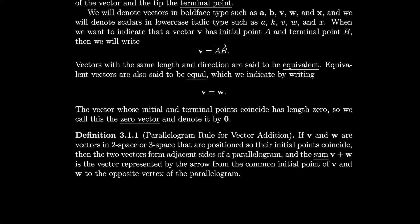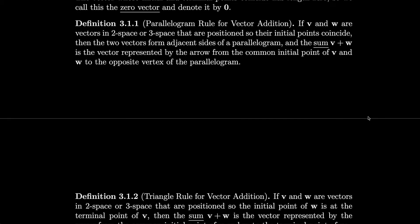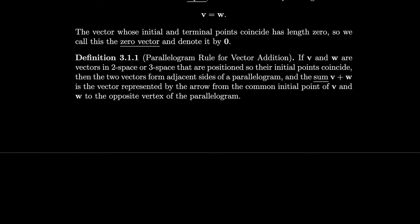We also have the parallelogram rule for vector addition. If v and w are vectors in 2-space or 3-space positioned so that their initial points coincide, the two vectors form adjacent sides of a parallelogram. The sum v plus w is the vector represented by the arrow from the common initial point of v and w to the opposite vertex of the parallelogram — something like this, where I have vector v, vector w, and I draw the rest of the parallelogram. That vector would be v plus w.